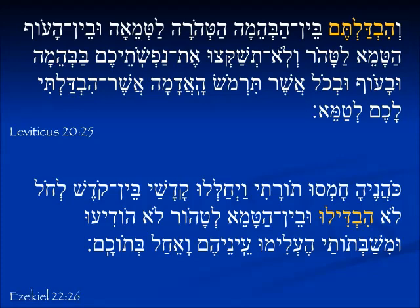The form hivdaltem is conjugated in the perfect but read in the imperfect, in the future tense, because of the vav conversive. 'Ben ha'behemah hatihorah le'time'ah,' between the animals which are clean and unclean. Again, talking about clean and unclean in Ezekiel 22, he's talking about the priests, kohanim. Lo hivdilu — they didn't separate. The priesthood is corrupt. So this is a third person plural, and again we do see the yud infix coming back in.